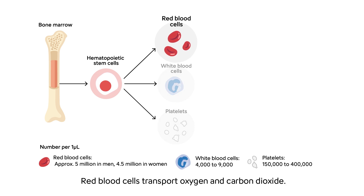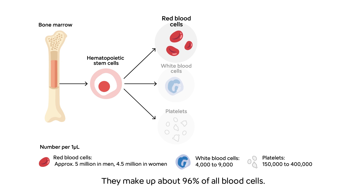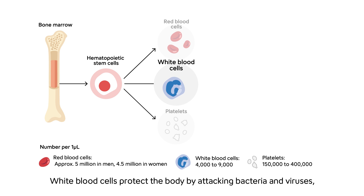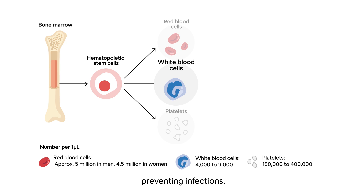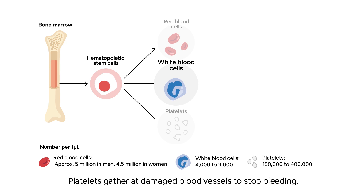Red blood cells transport oxygen and carbon dioxide, and make up about 96 percent of all blood cells. White blood cells protect the body by attacking bacteria and viruses, preventing infections. Platelets gather at damaged blood vessels to stop bleeding.